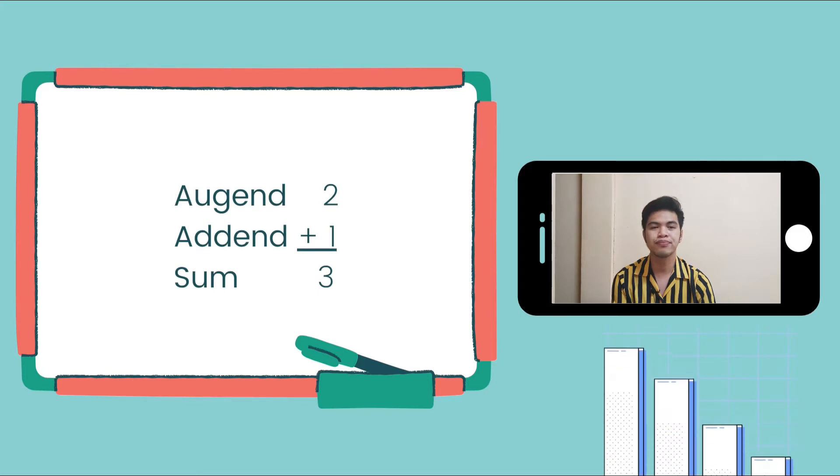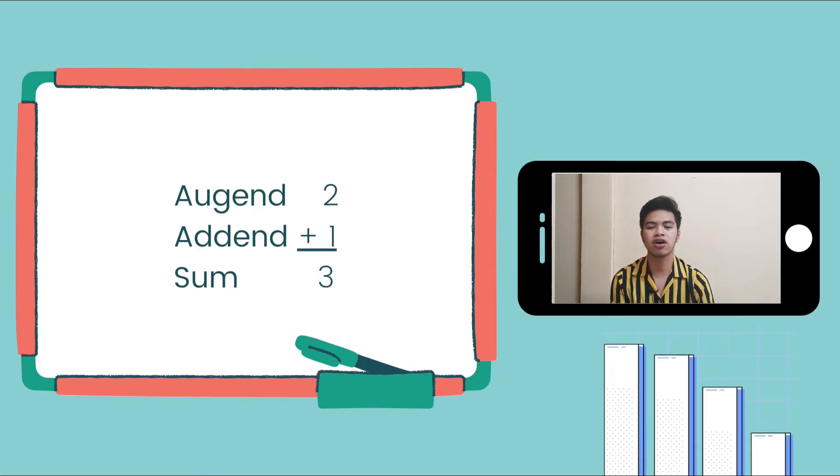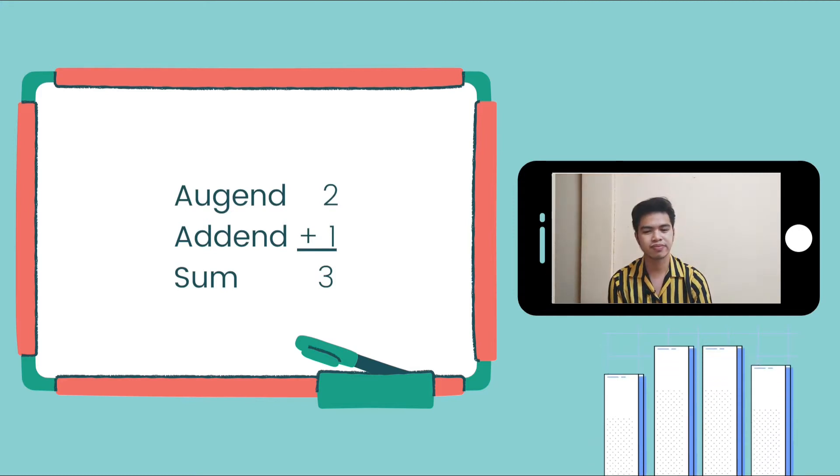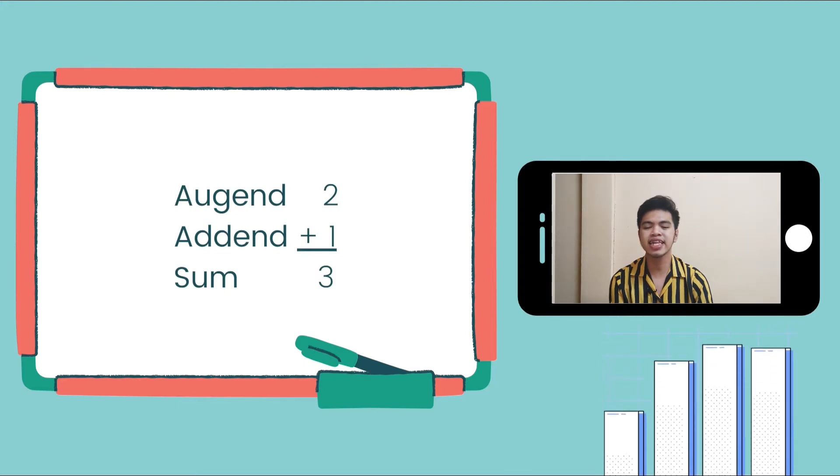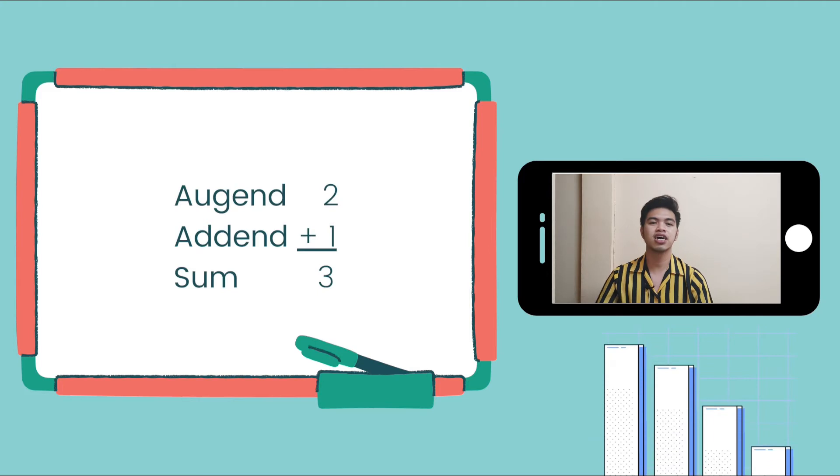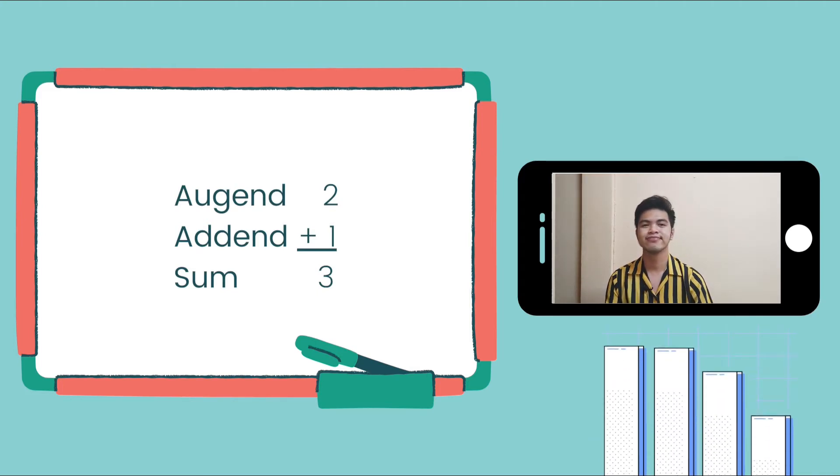It is the number at the top. It is augend. And then, we have the addend one. It is the number that is being added to the augend. It's called addend. And then, the total is sum. It is the answer in the equation. It is in the last part.